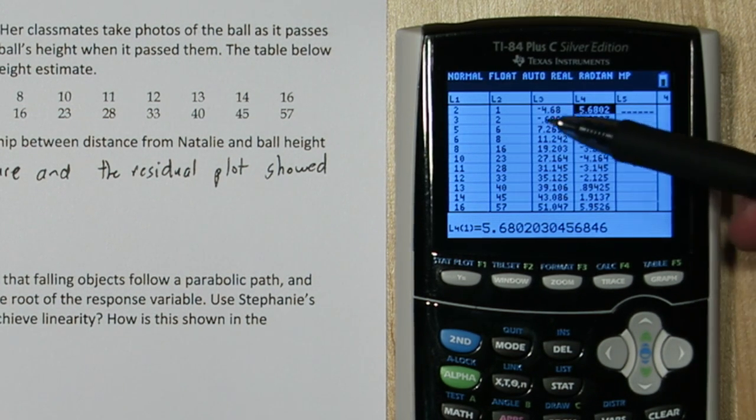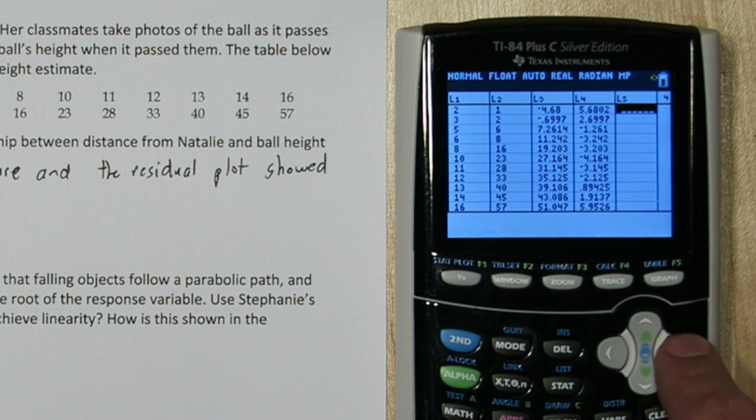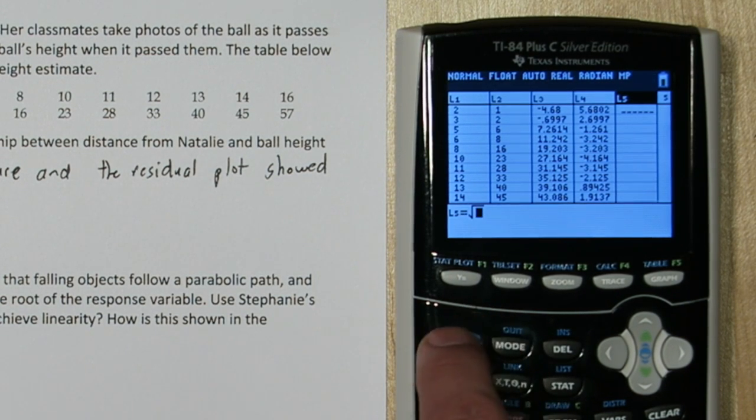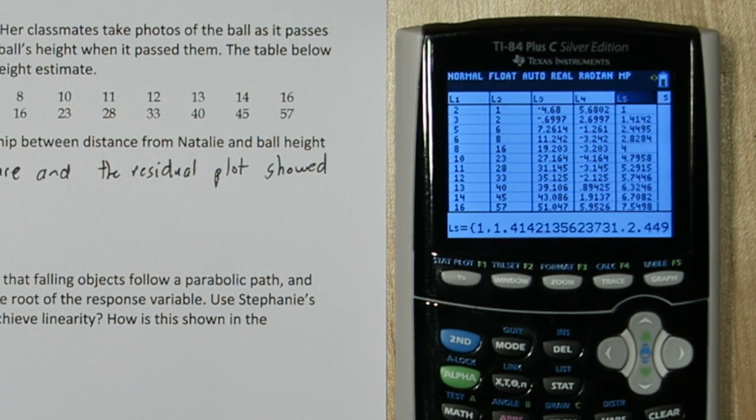Now our original response variable is stored in list 2. So I'm going to go over to list 5 and press up, and I'm going to say take the square root of list 2, 2nd 2. Alright, here's the square root of list 2.